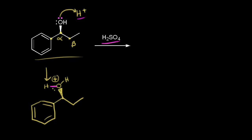There's also a hydrogen on this carbon going away from us in space. For our beta carbon, we have two beta protons — one on a wedge and one on a dash. And then we draw in the CH3 group.